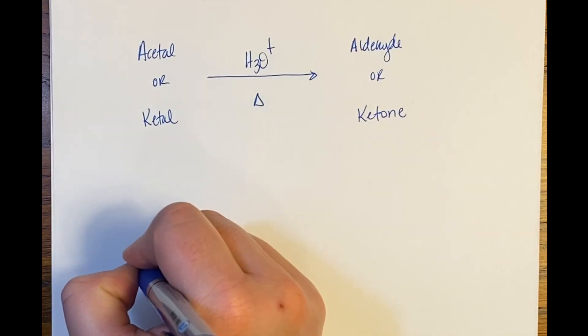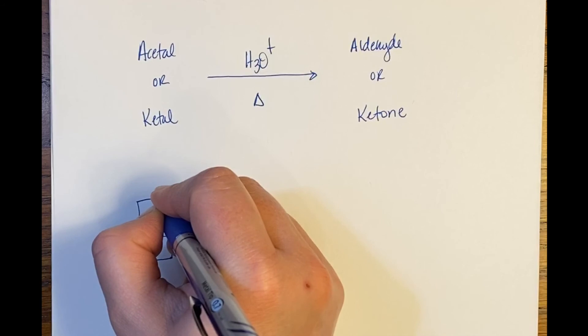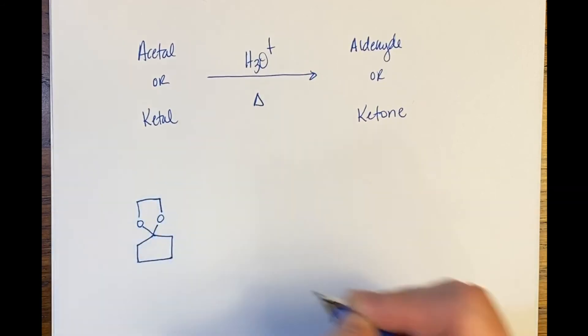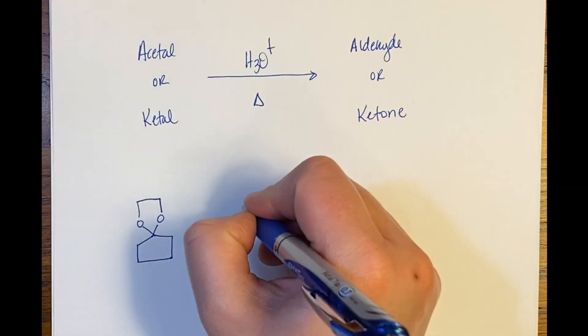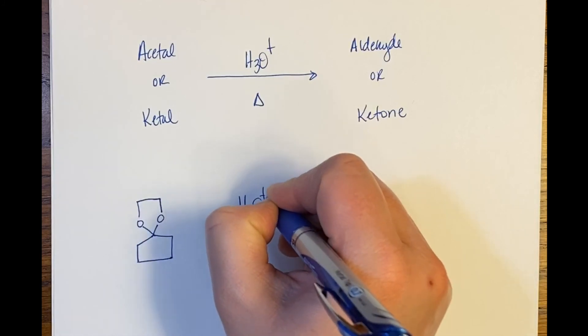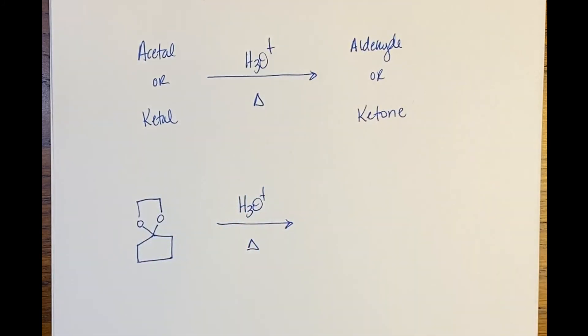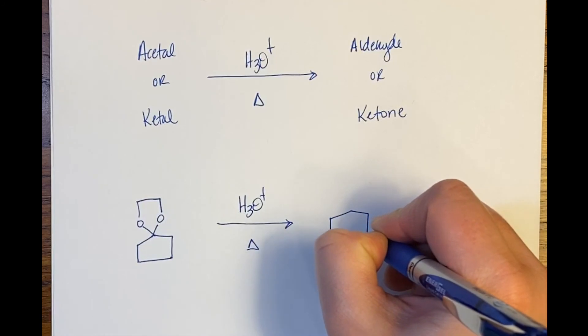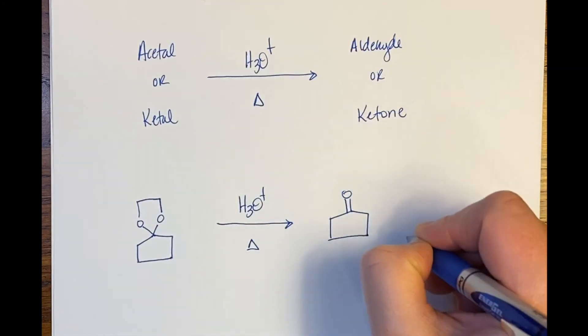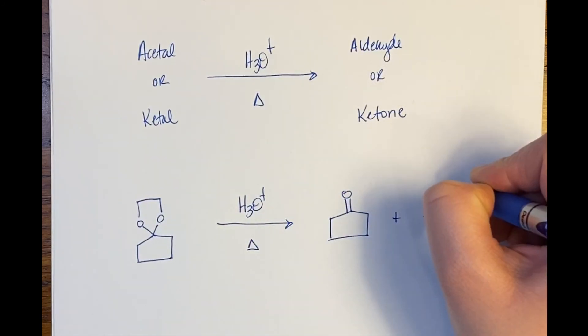So as an example, if I had this ketal, and I treated it with H3O+ and heat, the product that I would make out of this reaction is my ketone plus my diol.